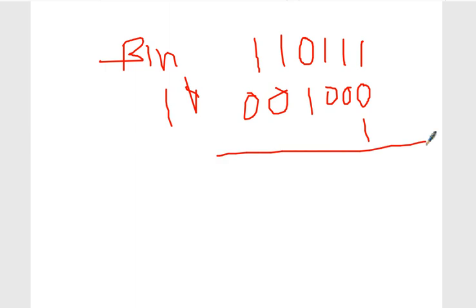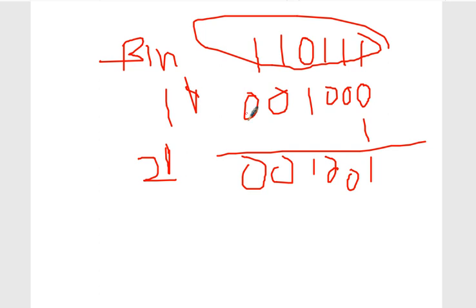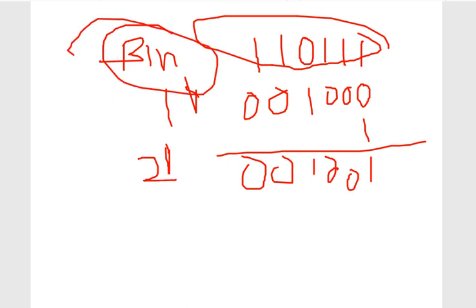Now if you want to get the two's complement, just add one to the one's complement. So 0000 plus one gives 0001. This is the two's complement of 1111. This is the procedure to get the one's and two's complement of a given binary number.